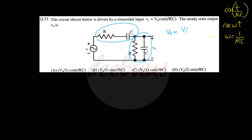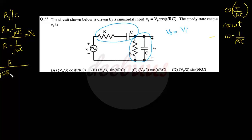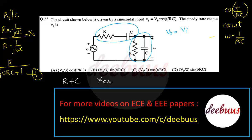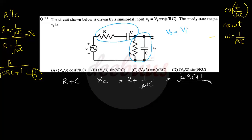We calculate R parallel C: (R × 1/jωC) / (R + 1/jωC), which simplifies to R / (jωRC + 1) — marking this as expression 1. We also evaluate R in series with C: R + 1/jωC = (jωRC + 1) / jωC — marking this as expression 2.